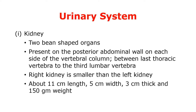Kidneys are present on the posterior abdominal wall on each side of the vertebral column. One kidney is present on the left and the second kidney is present on the right side of the vertebral column, at the back inside wall of the abdominal cavity. Each kidney is exactly present between the last thoracic vertebra and the third lumbar vertebra. There are a total of 33 vertebrae in the vertebral column, of which 12 are in the thoracic region and 5 are in the lumbar region.